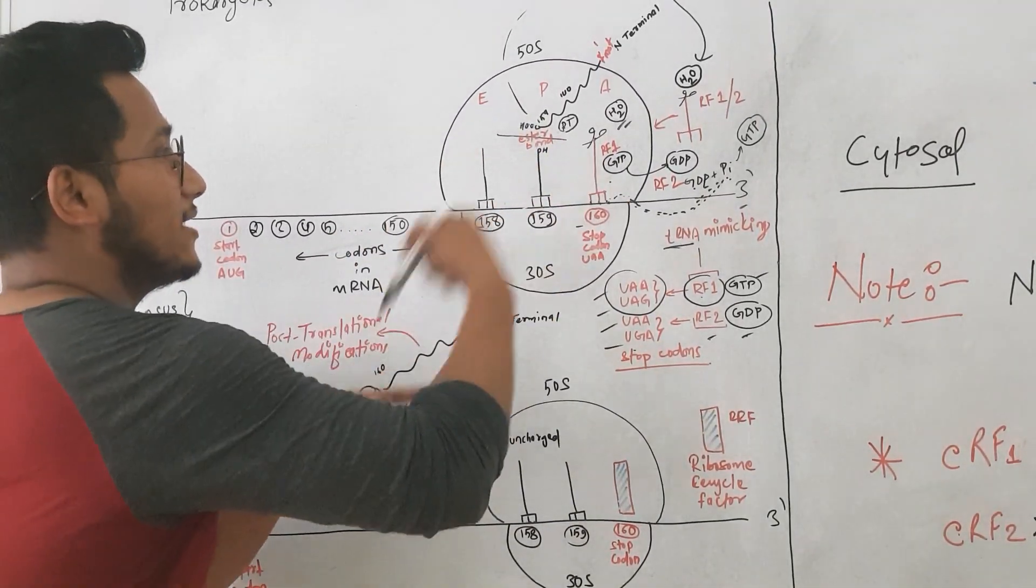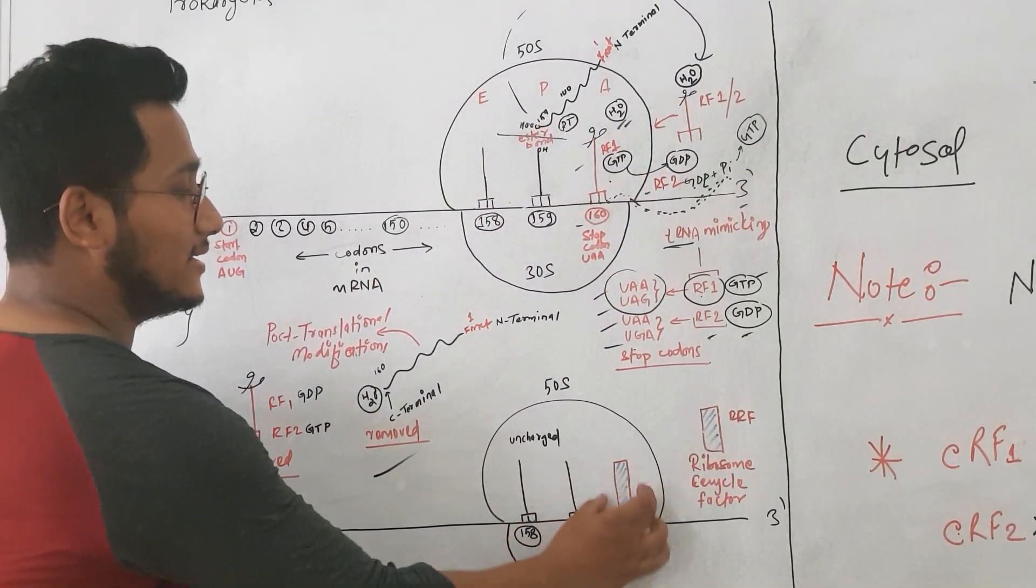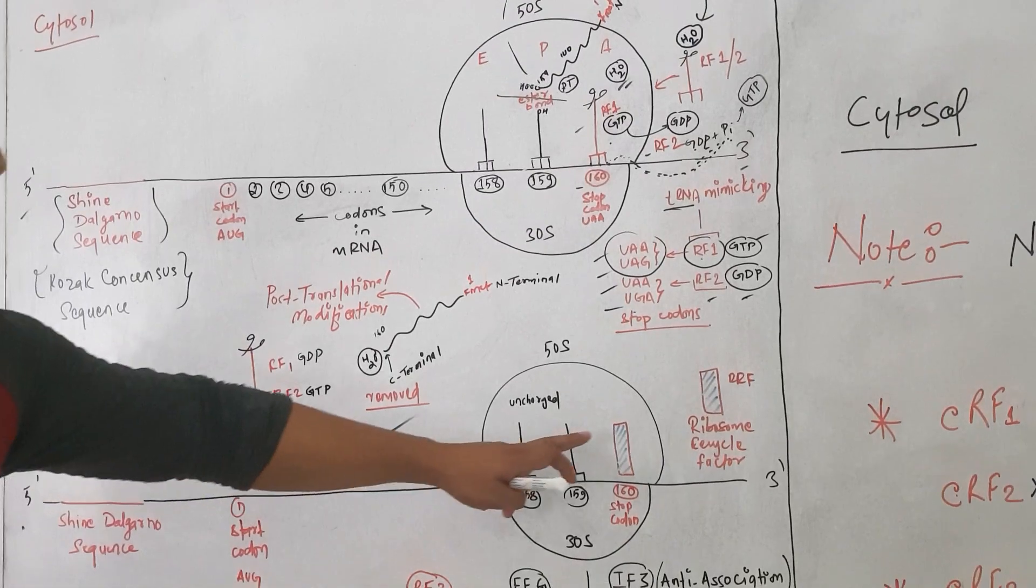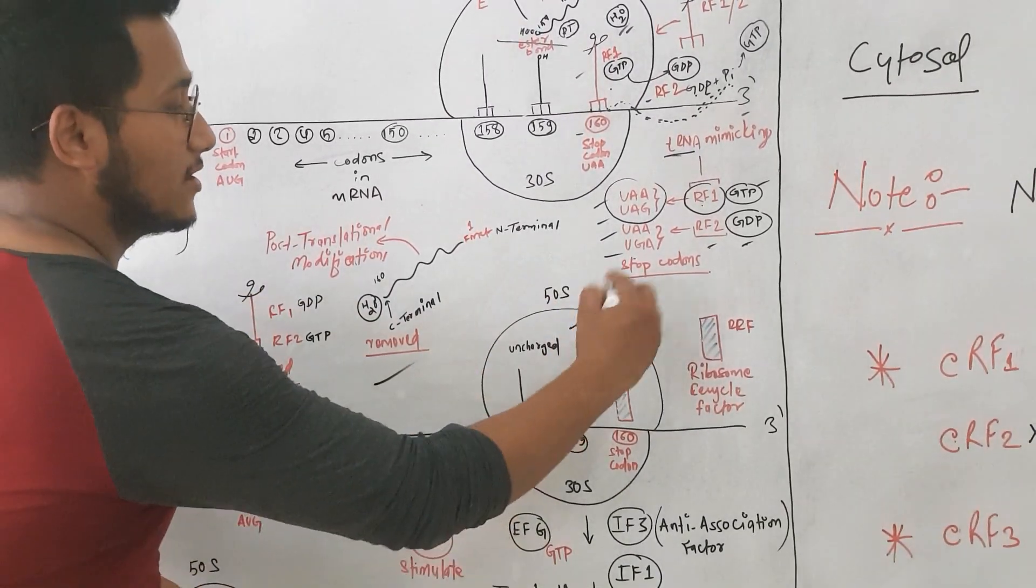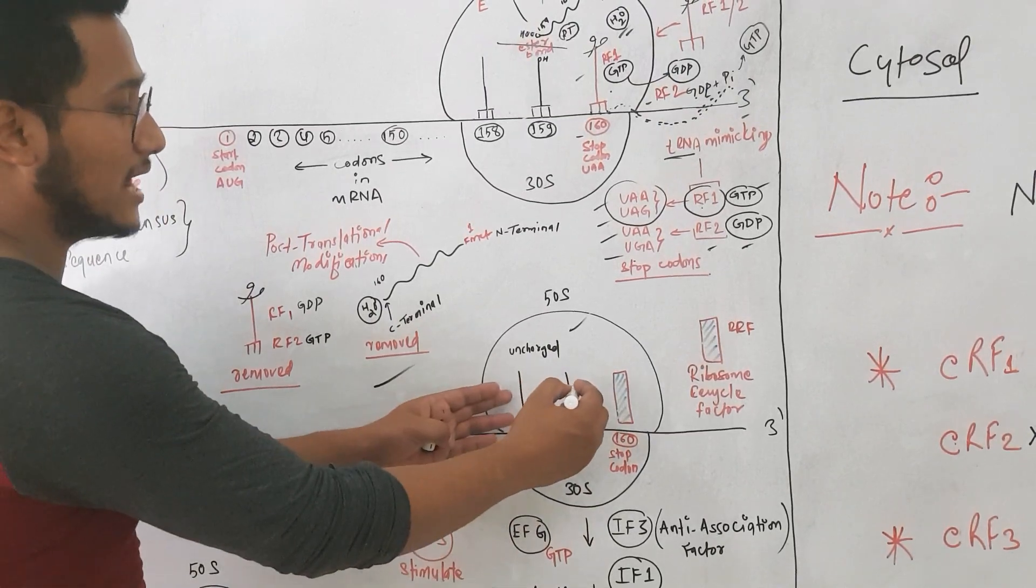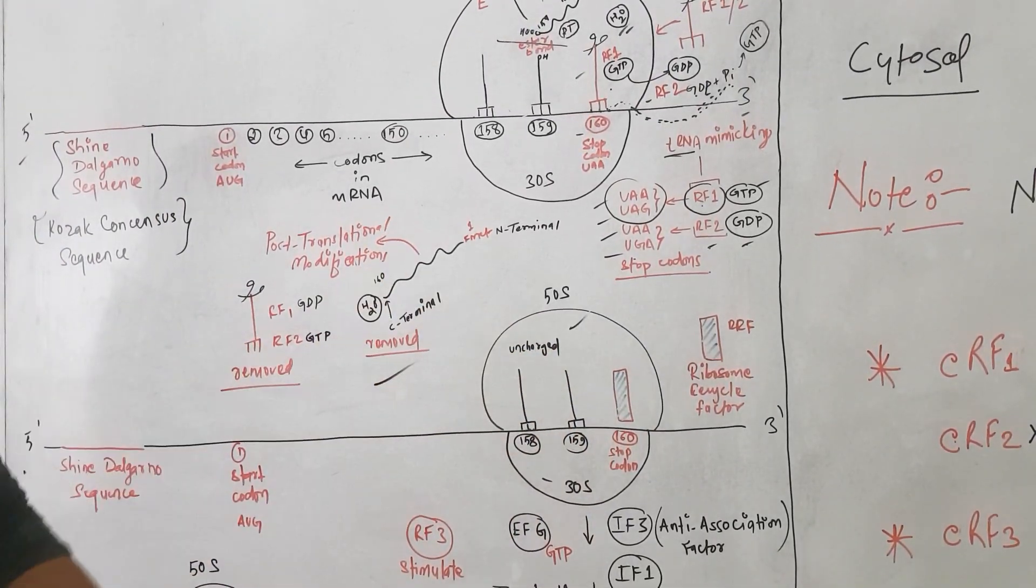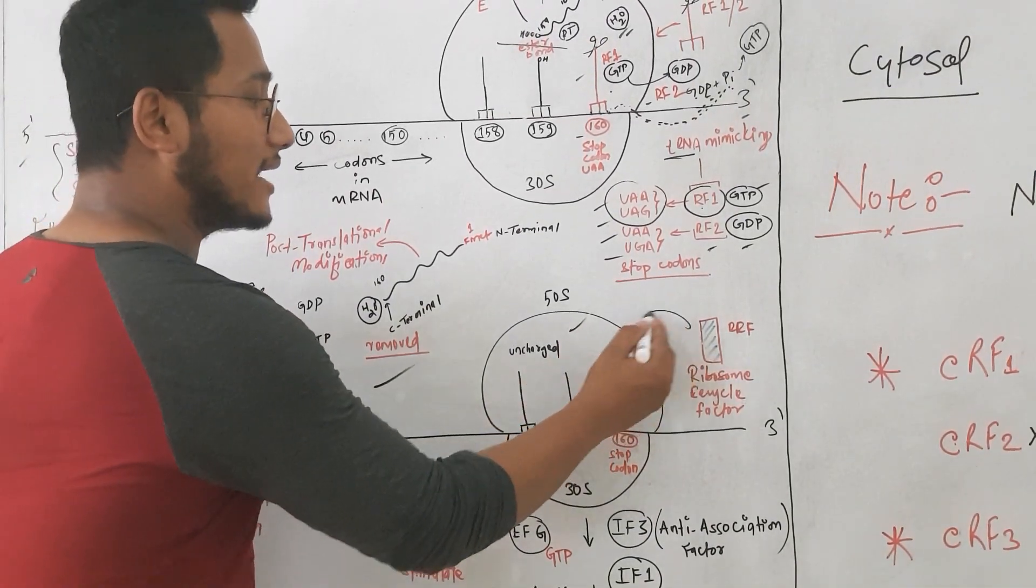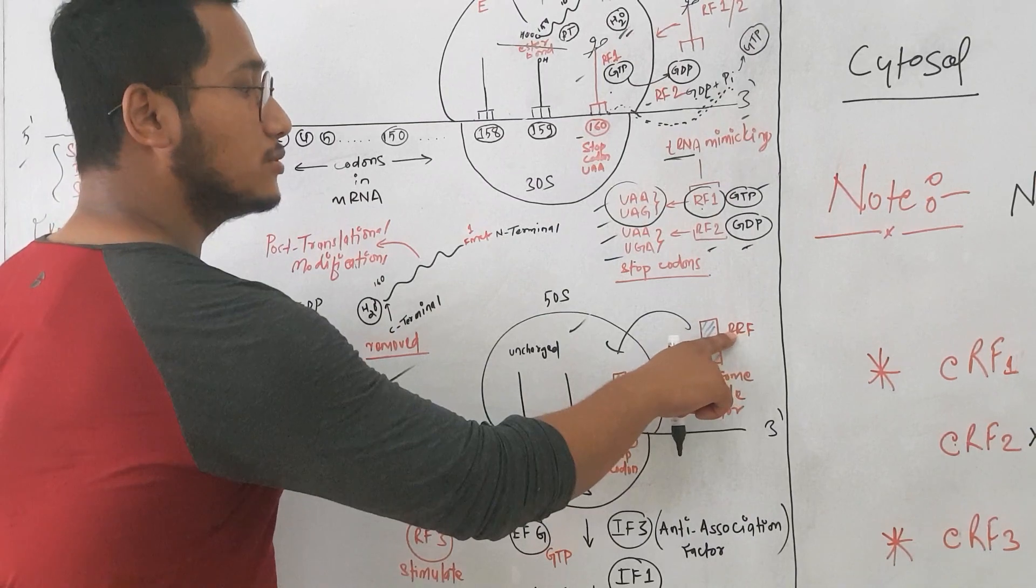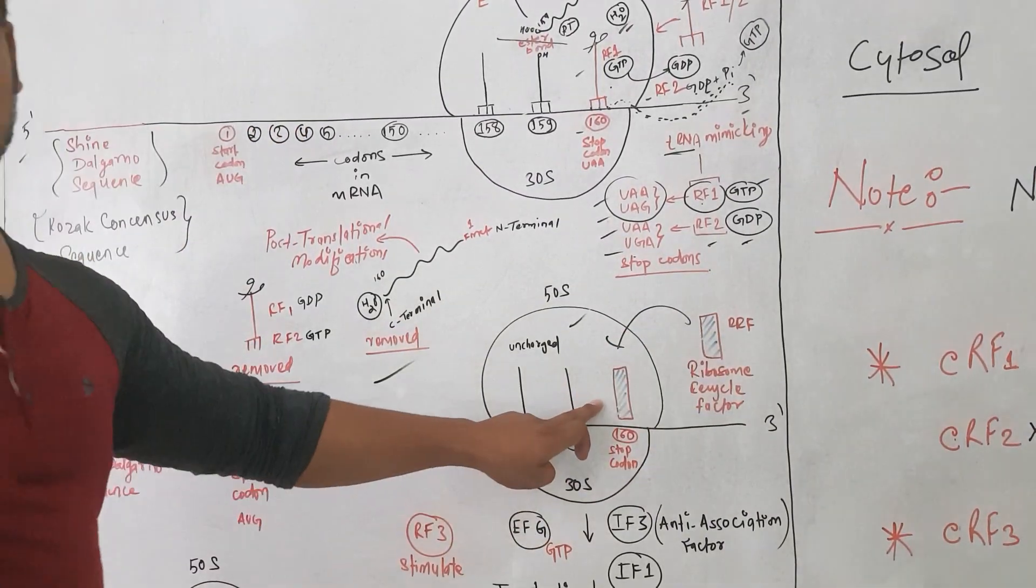The GTP of RF1 was used for peptidase, for the hydrolysis of the ester bond. Now, once RF1 and RF3 are removed, the site is empty. We need to understand what is remaining: 50S, 30S, and mRNA are remaining. This needs to be removed. It is RRF, which is ribosome recycling factor, which enters into the A site.